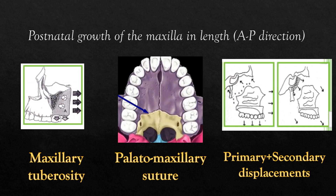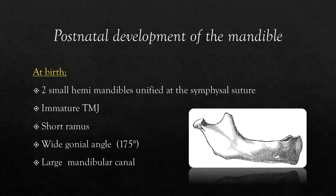In the anterior-posterior direction, the forward passive motion of the maxilla is constantly being compensated by bone apposition in the maxillary tuberosity area and by the palatal process of both the maxillary and palatine bones. At birth, the two small hemimandibles are unified at the symphyseal suture. The temporomandibular joint is immature, the ramus size is short, the gonial angle is obtuse, and the mandibular canal is large.